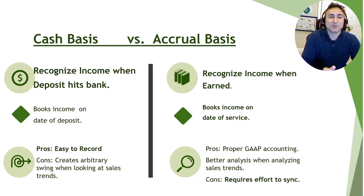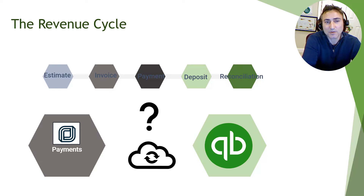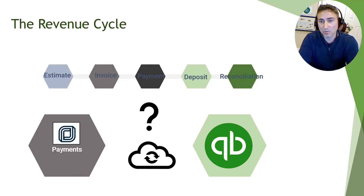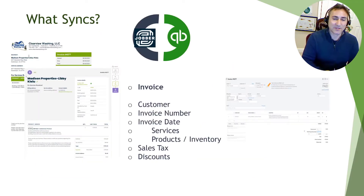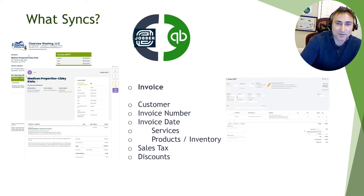Let's deep dive into what the sync is. When looking at revenue, it comes down to invoices and payments — those are the two things that Jobber will push to QuickBooks Online. It's a one-directional push. Estimates will not go over to QuickBooks, nor will deposits. Specifically, what does the invoice push include? That's the customer, invoice number, invoice date, services, products, sales tax, and discounts. Those are the fields that will go over from Jobber's invoice form to QuickBooks.